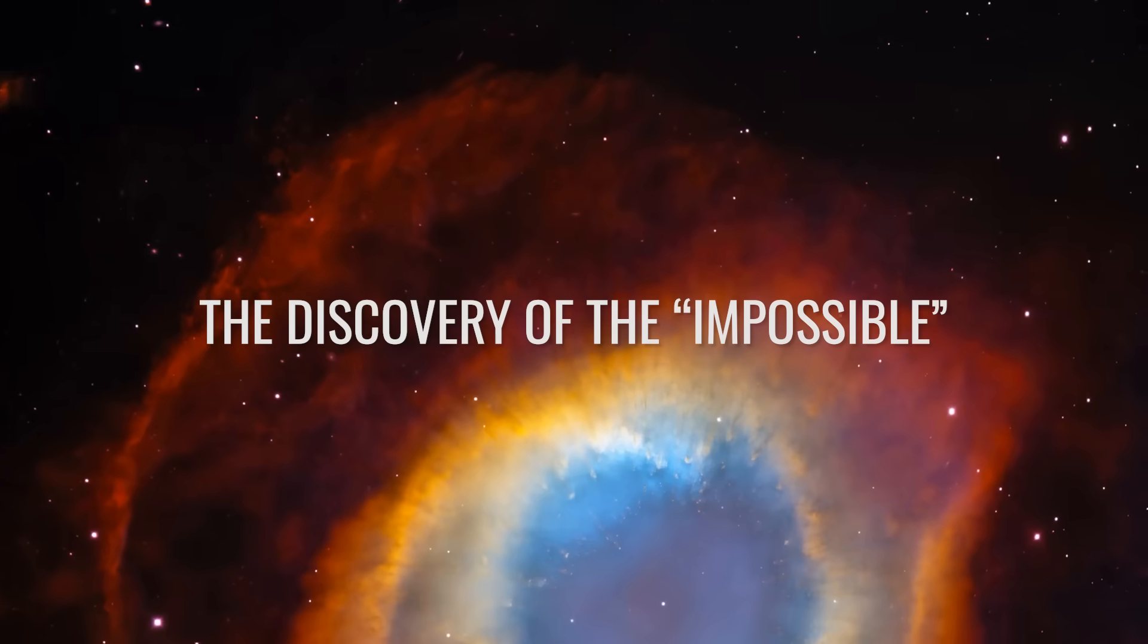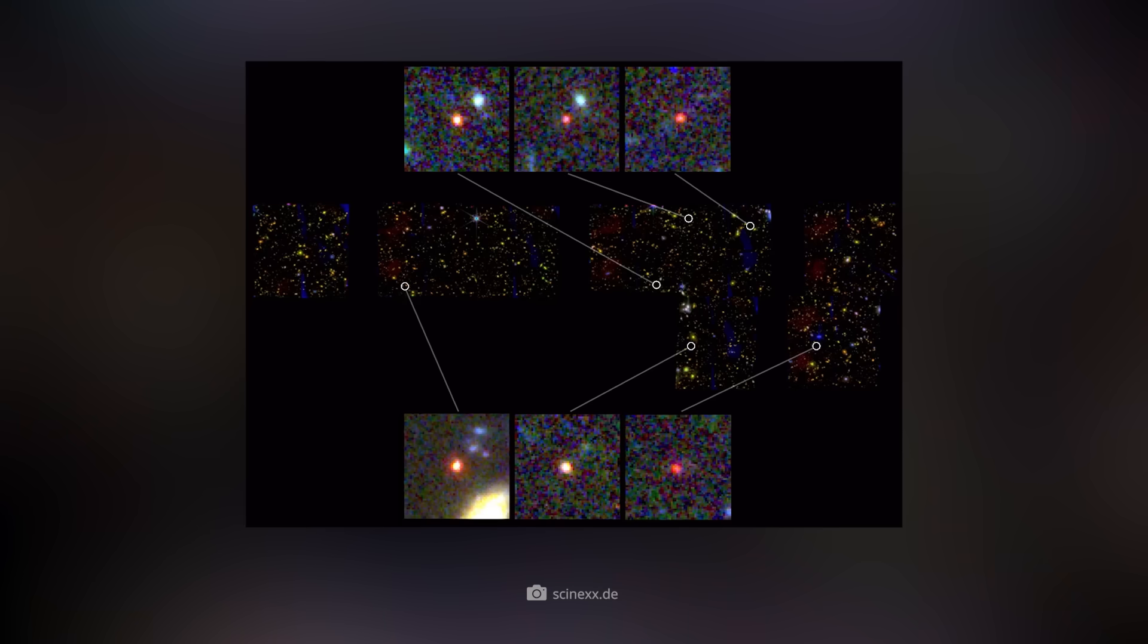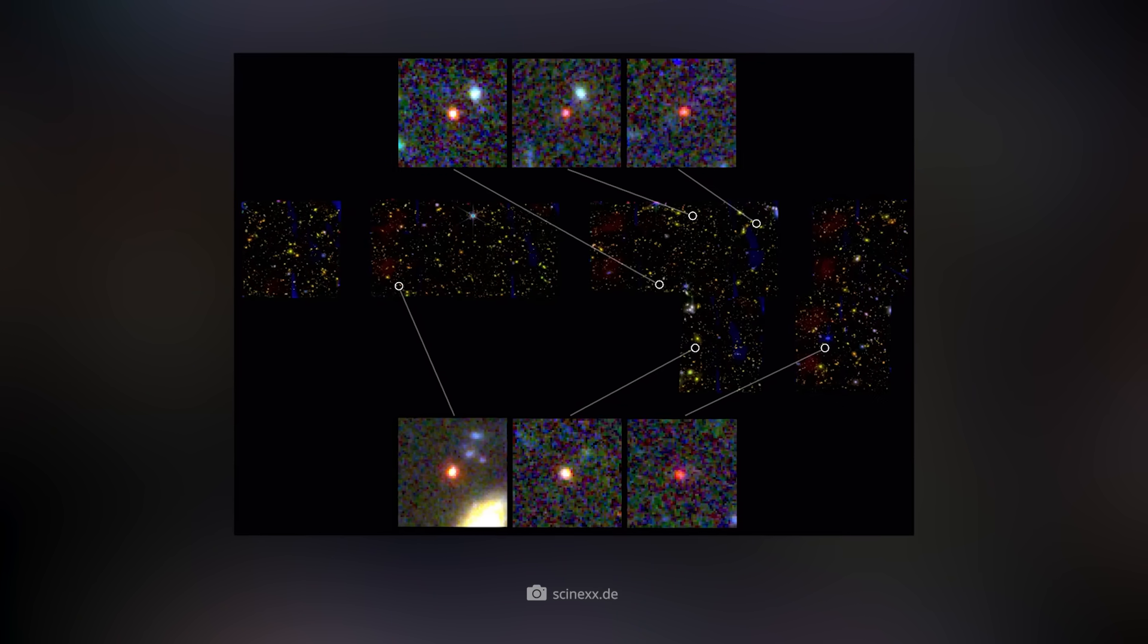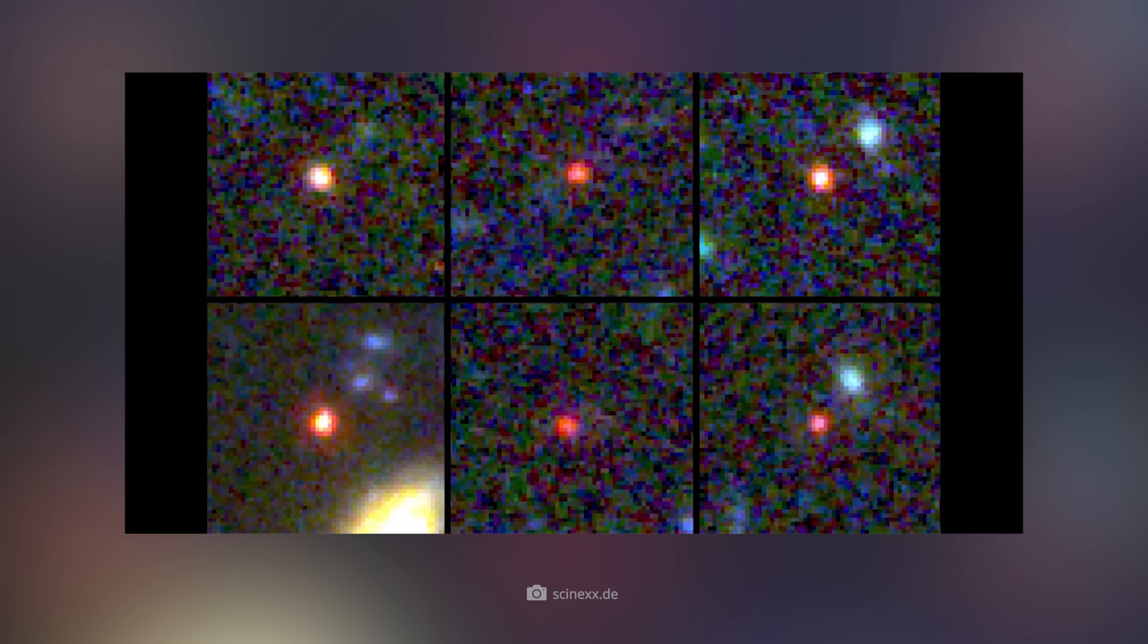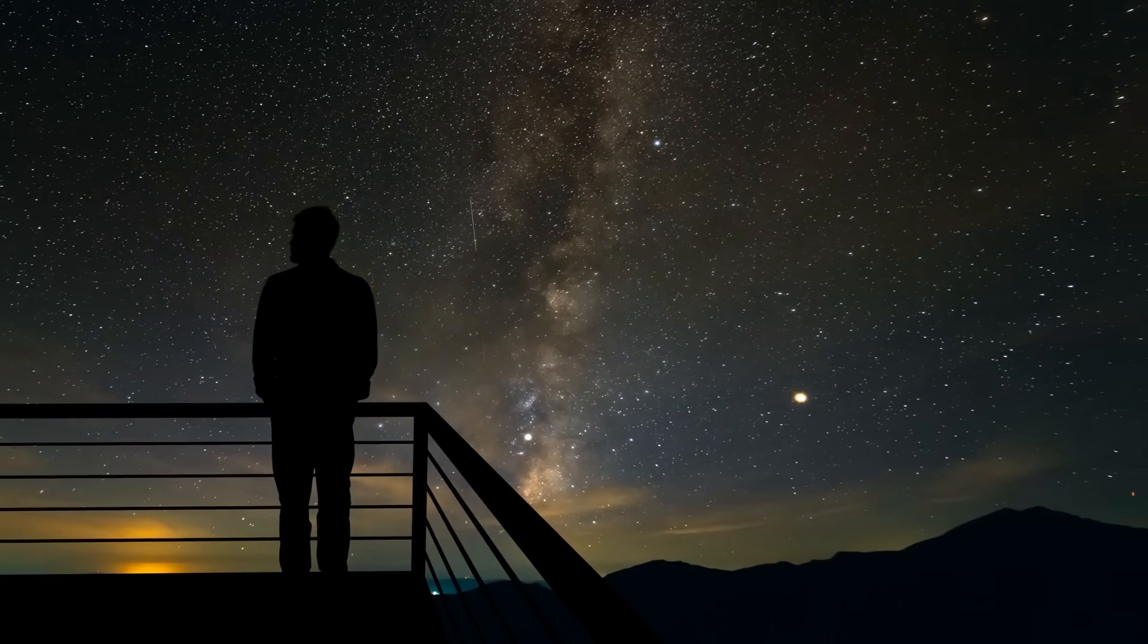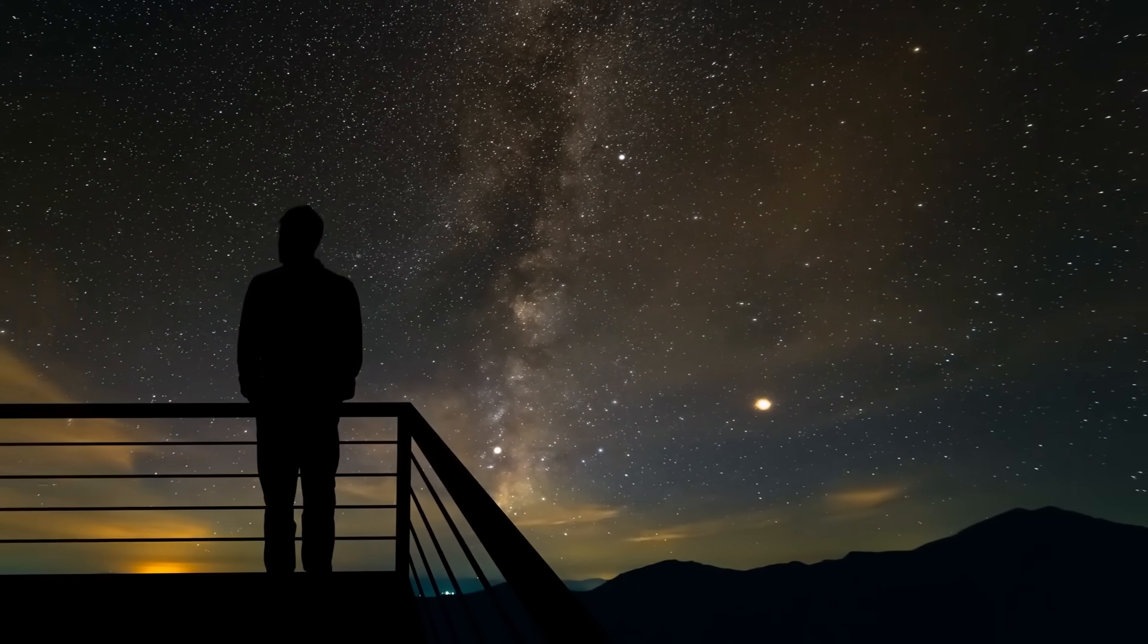Astrophysicist Ivo Labbe and his team at Swinburne University of Technology in Melbourne had been analyzing some images taken by the NIRCAM near-infrared camera from the James Webb Telescope's early release program. More specifically, the images showed a section of the sky near the Big Dipper, commonly known as part of the dawn of the universe. And sure enough, it didn't take long for Labbe to realize that he and his colleagues had just discovered something extraordinary.